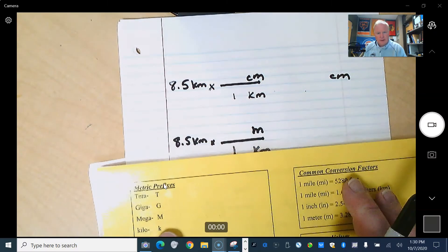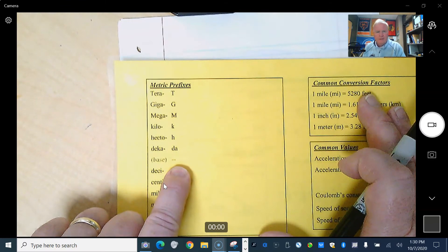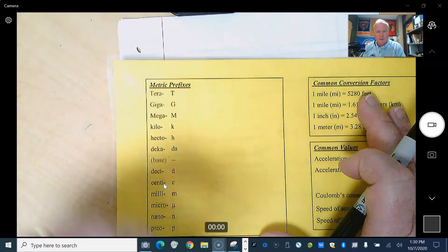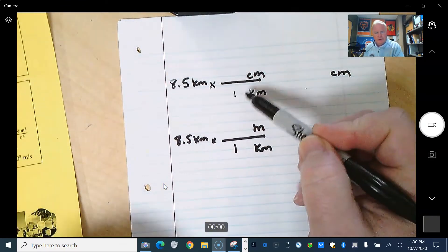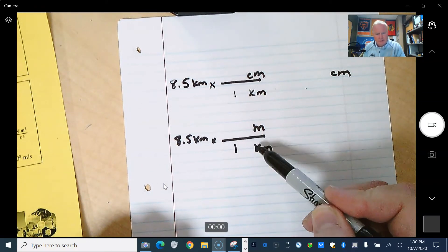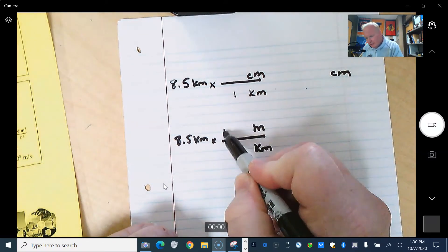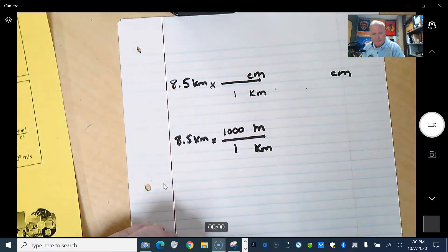And even if you were to ask yourself, well, what's the number for meters? Well, meters is the base. It has no number. So you don't have that choice that you had over here where you had to choose between 100 and 1,000. Our choice here is kilo is 1,000. Meter doesn't even have a number, so we'll just put in 1,000.